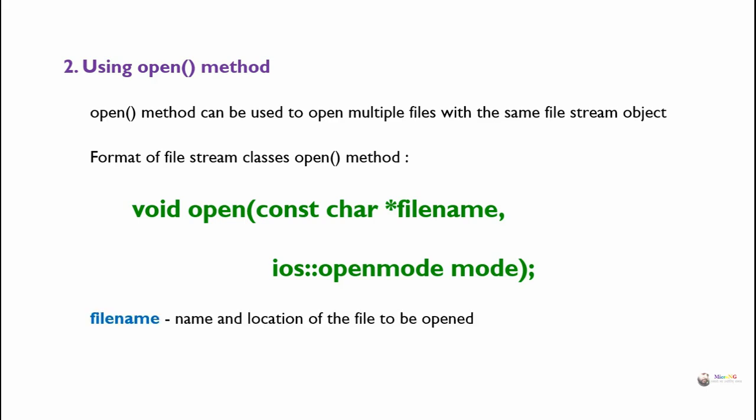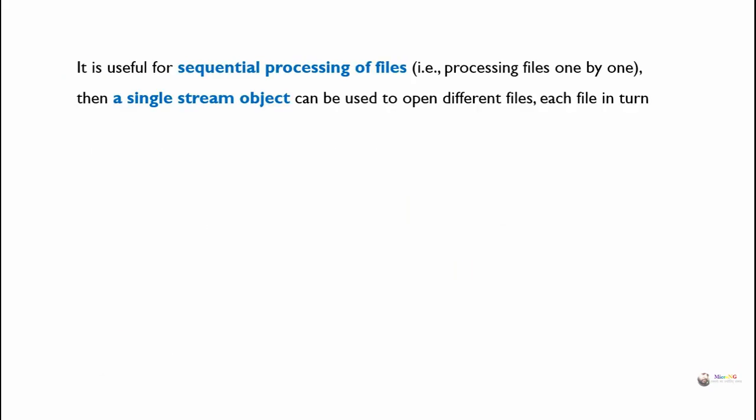The first parameter is the file name — the name and location of the file to be opened. The second parameter, mode, defines the mode in which the file should be opened. This method is useful for sequential processing of files — processing files one by one. A single stream object can be used to open different files each in turn, opening one file, performing processing, closing it, then opening the next file sequentially.